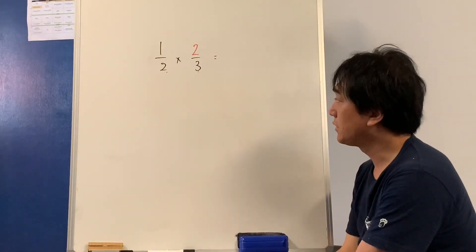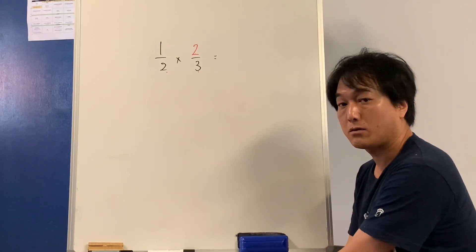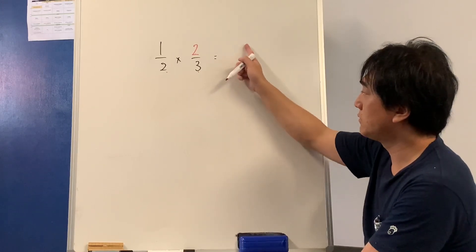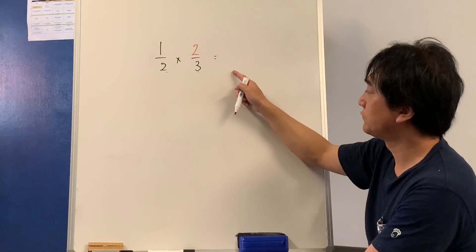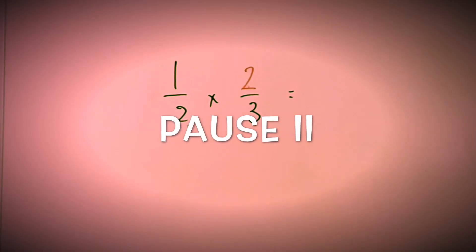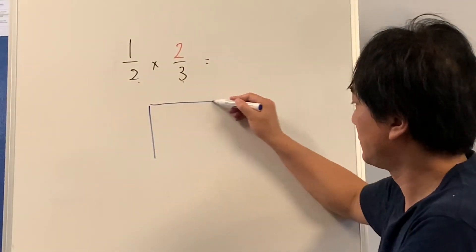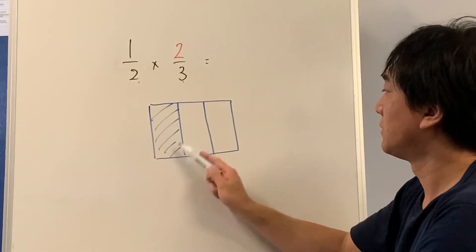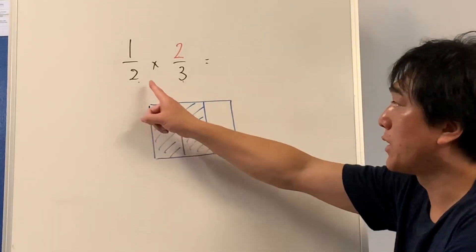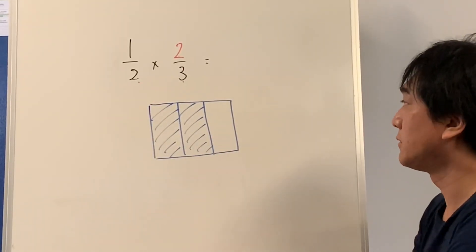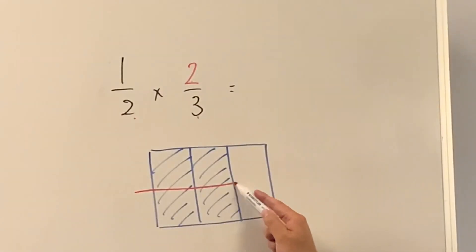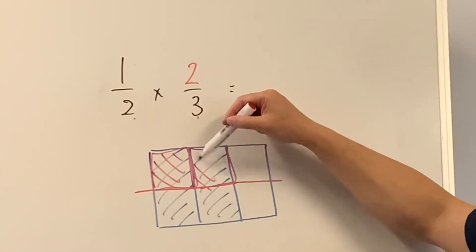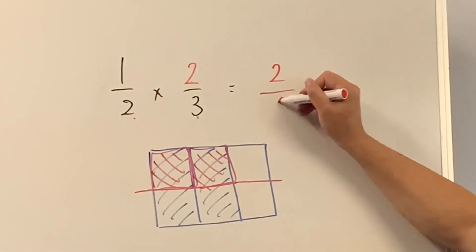What would be the answer? Do you think you can draw a picture to find the answer, or write a conjecture? Two-thirds are here. I need one-half of that — one-half of two-thirds. This is what I'm taking. These two pieces are what I'm taking. The answer seems to be two-sixths.